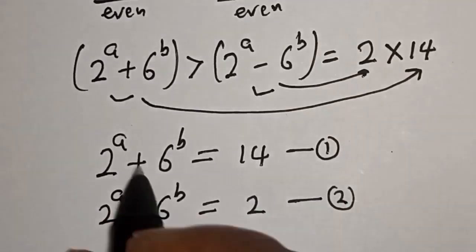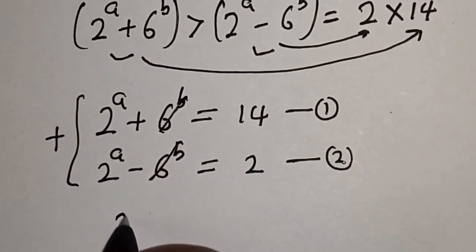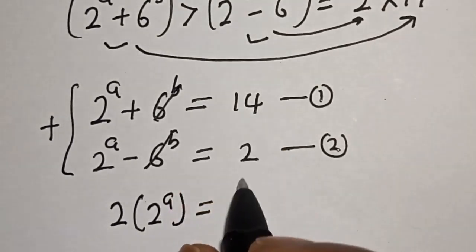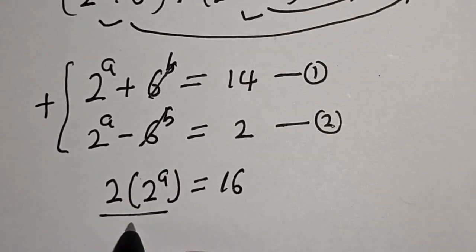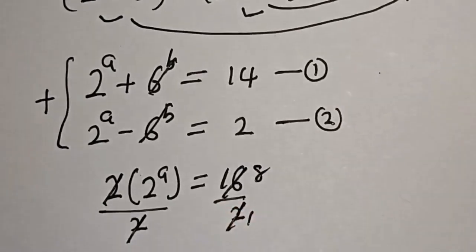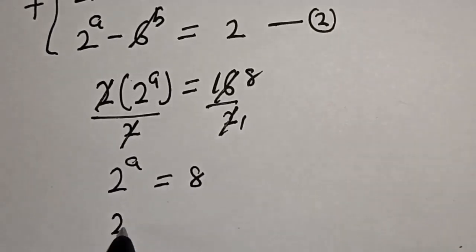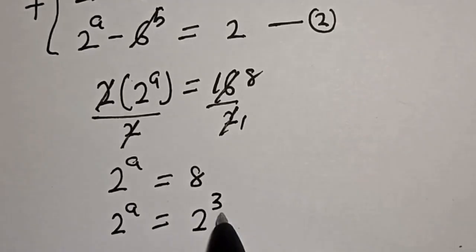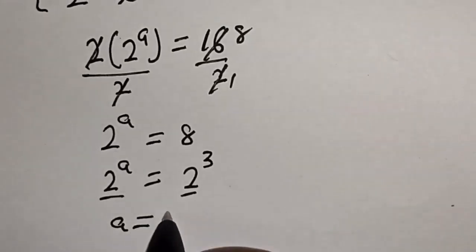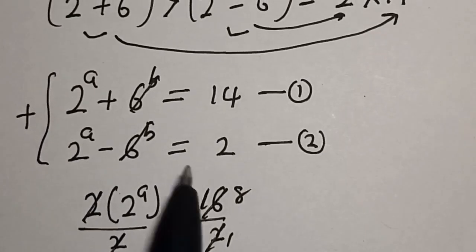Adding equation 1 and equation 2 together, we get 2 times 2 to the power of a equals 14 plus 2, which is 16. Dividing both sides by 2, we get 2 to the power of a equals 8. Since 8 equals 2 to the power of 3 and they have the same base, a is equal to 3.